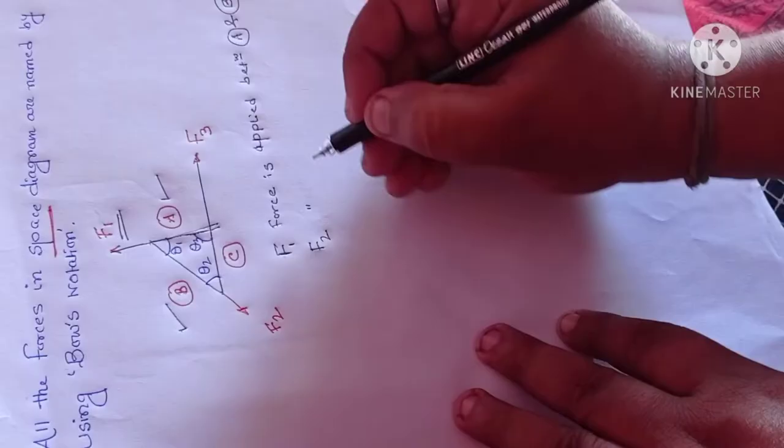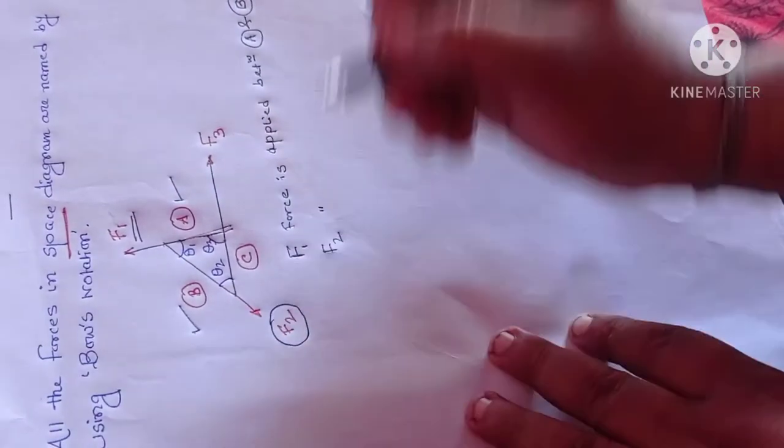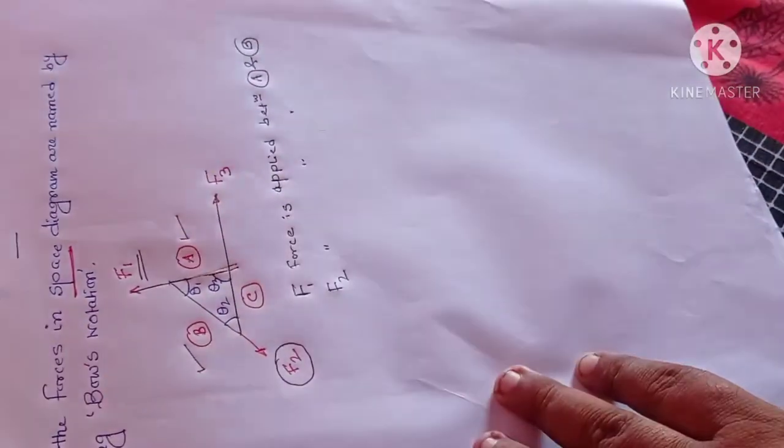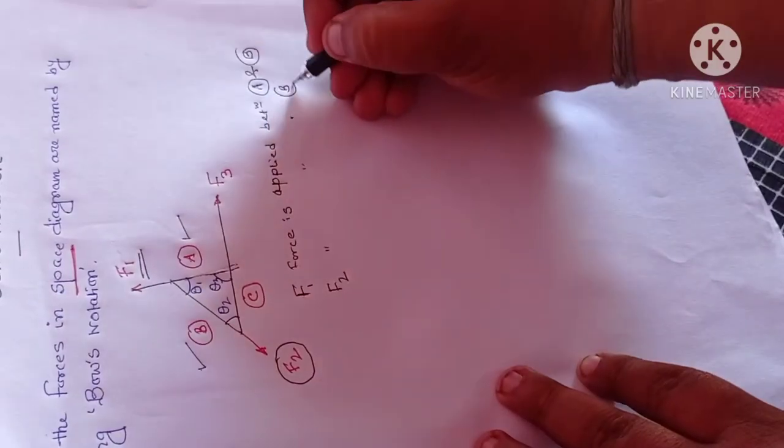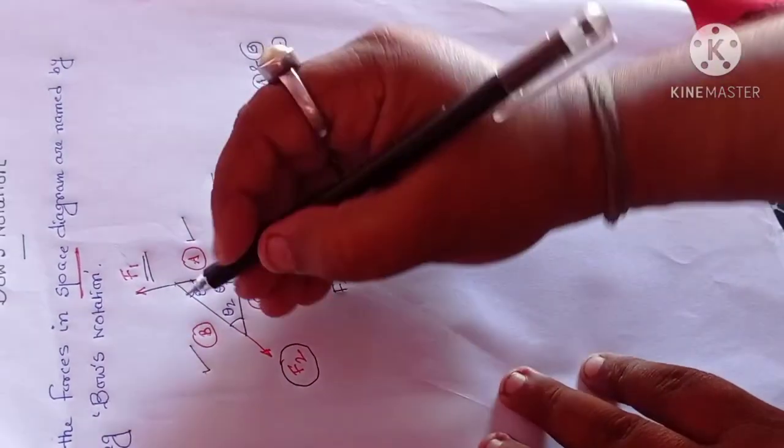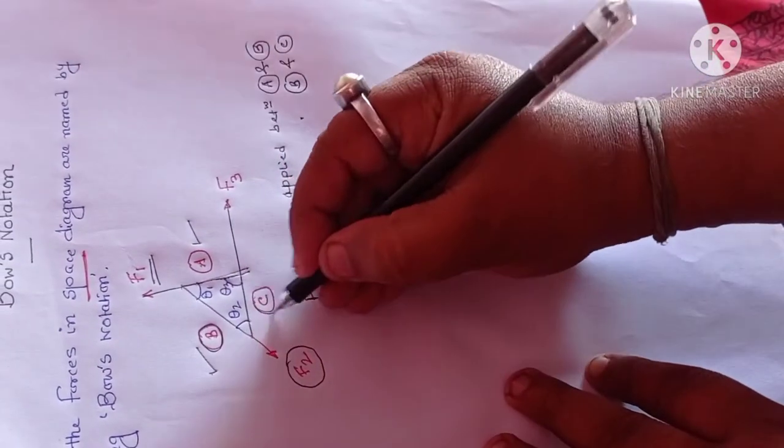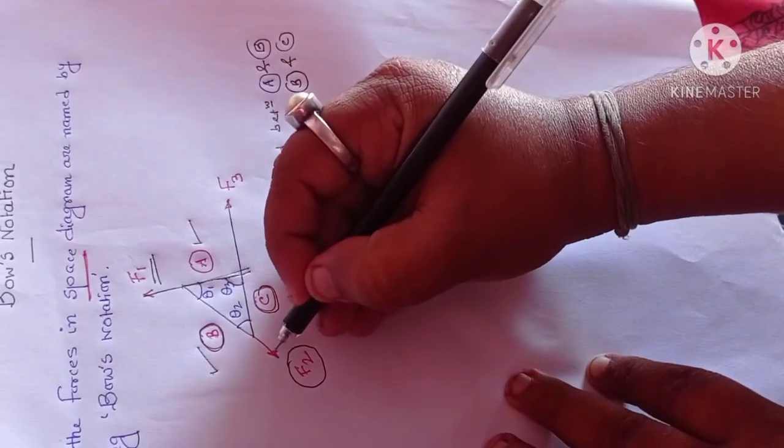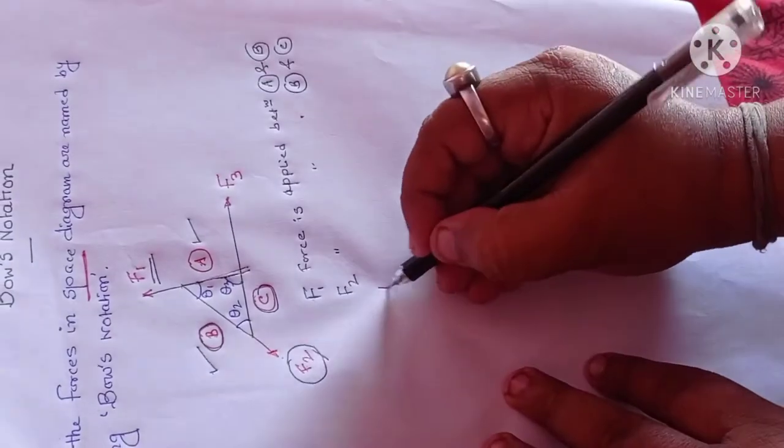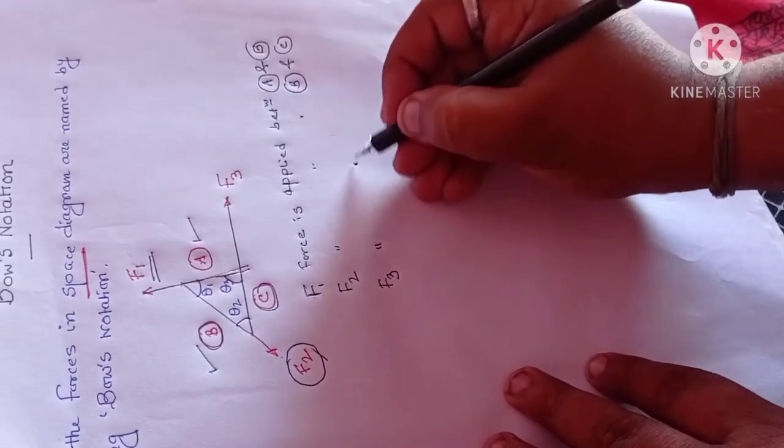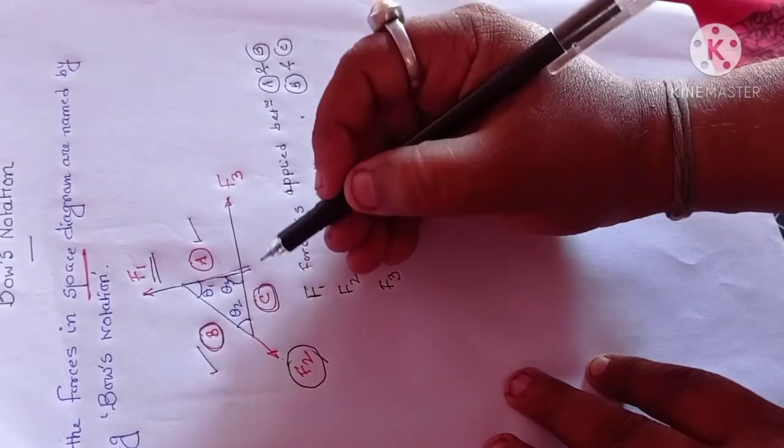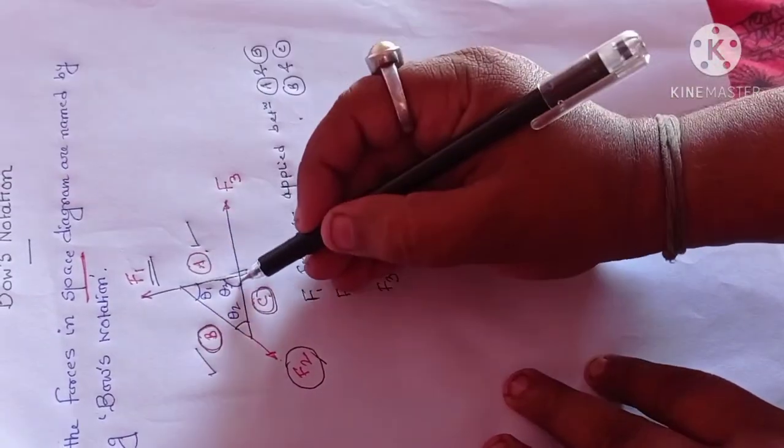Simultaneously, if you're talking about F2 force, this is your F2 force applied between B and C. That is B and that is C, and in between the force that is F2. Similarly, if you're talking about F3 force, it is applied between C and A, that is the force F3.